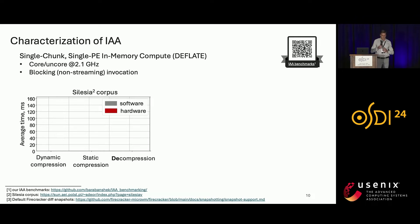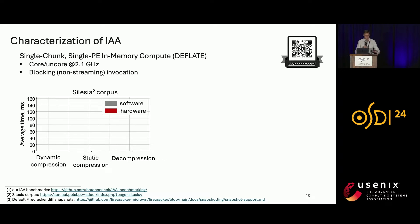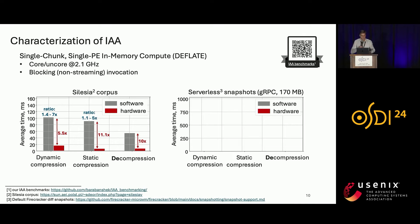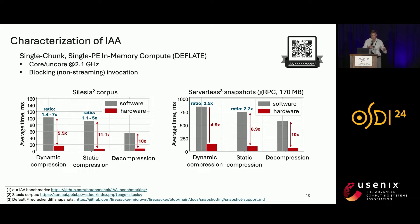This graph compares hardware and software implementations of the same algorithm on the Silesia corpus — the standard benchmark for compression algorithms. The y-axis shows average compression time in milliseconds and the x-axis shows different compression modes. Dynamic deflate achieves up to 7x compression ratio and can be accelerated up to 5.5x with hardware. Static compression achieves up to 5x and is 11x faster with IAA. The accelerator performs decompression 10x faster than software — a similar trend holds for snapshots of dirty pages of a gRPC server.